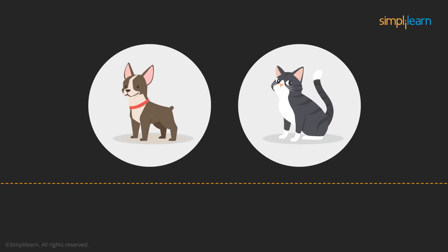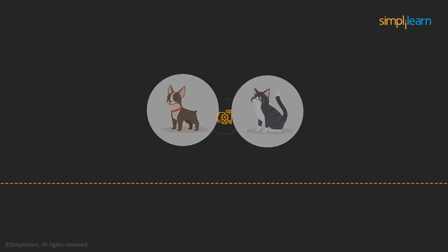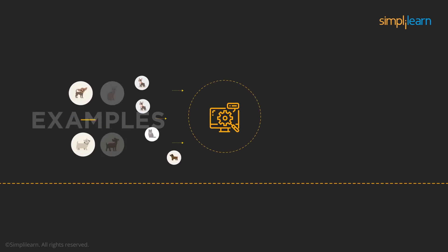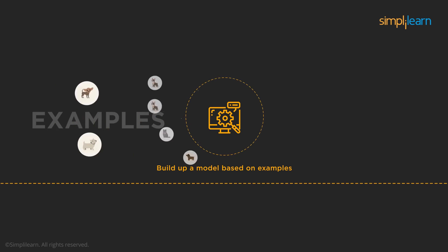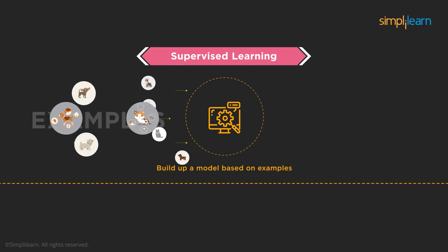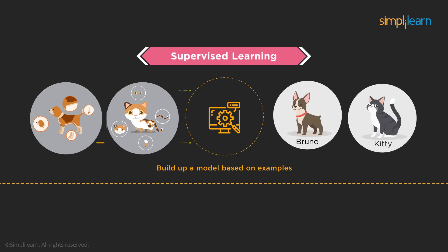Imagine that you have photos of your favorite pets, Bruno and Kitty. Is there a way to explain to a machine how to distinguish a cat from a dog? You can feed the machine with hundreds and thousands of photos of cats and dogs, teaching the machine to build up a model based on these examples. This is what we term as supervised learning — we give the machine examples of each animal showing its features, and the machine learns how to differentiate between a dog and a cat. This way, it can recognize your Bruno and Kitty.